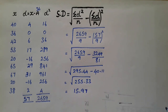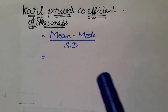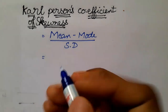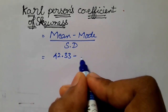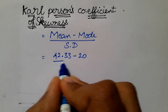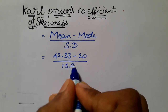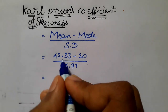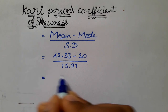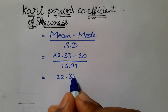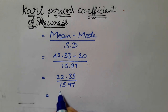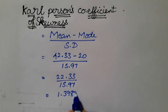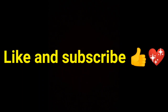Now we substitute into the formula: mean minus mode divided by standard deviation. Mean equals 42.33, mode equals 20, standard deviation equals 15.97. So the calculation is 42.33 minus 20, which equals 22.33, divided by 15.97. This is the final answer.